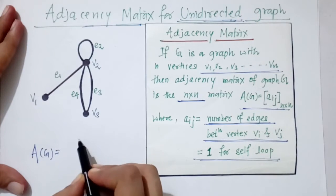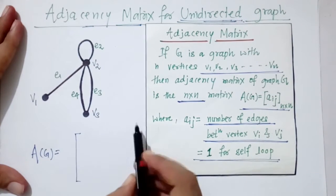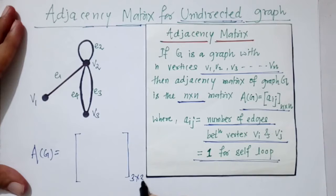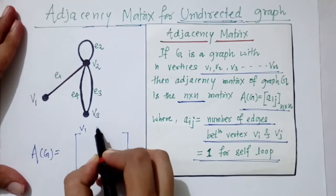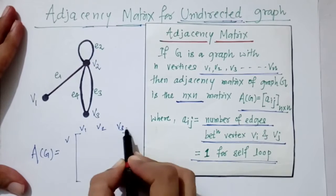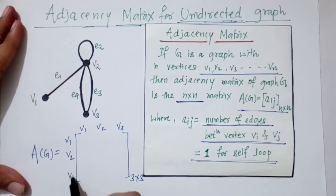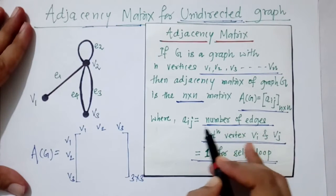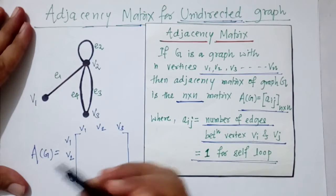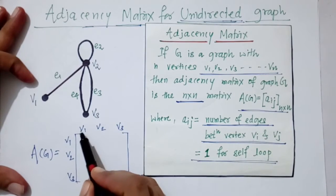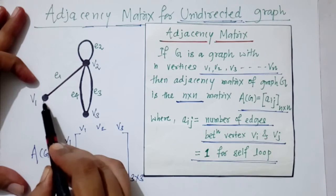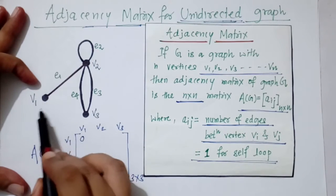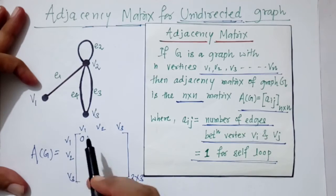Now we will see how to represent this graph as an adjacency matrix. We write the matrix of order 3×3 with vertices v1, v2, v3 in both rows and columns. We need to find all elements, which represent the number of edges between vertices. From vertex v1 to v1, we can see there is no edge, so we write 0.